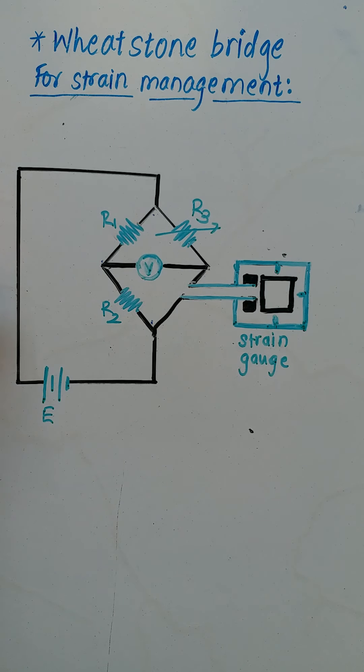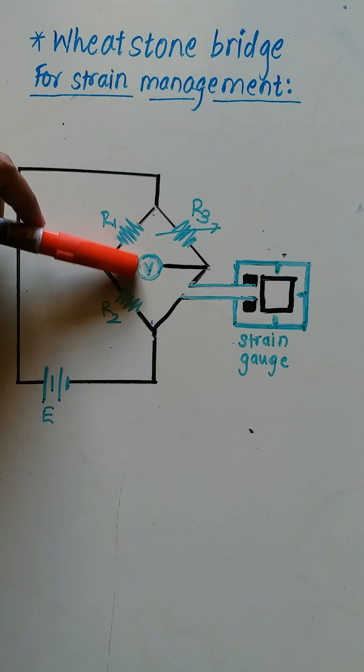Now, let us see its working. When no force is applied on the strain gauge, we have to adjust rheostat so that voltmeter indicates zero deflection. Now, remember here, in place of galvanometer, voltmeter is connected. So voltmeter is nothing but modification of galvanometer which we are going to see. But at present, remember this voltmeter measures voltage between these two points. And when it is showing zero deflection, we can say that this bridge is balanced.